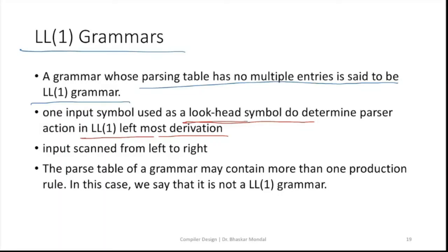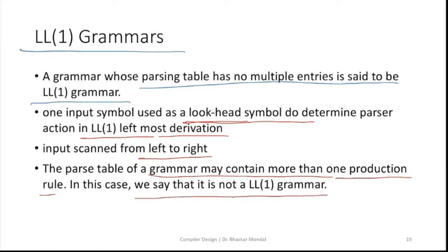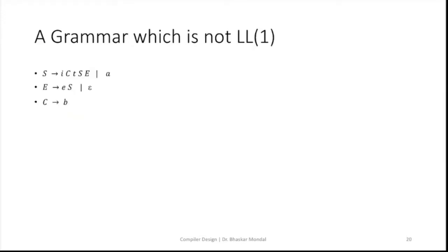Looking at the look-ahead symbol and input scanned from left to right, the parse table of a grammar may contain more than one production rule. In this case, we say that this is not an LL1 grammar. The first point and last point are similar. So here, if you see a grammar is given, we can show that this is not an LL1 grammar.